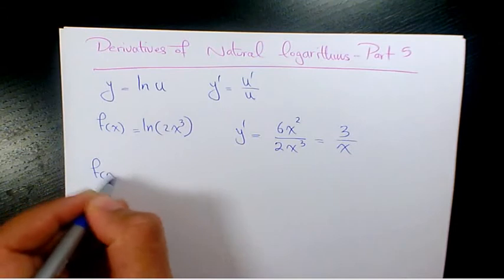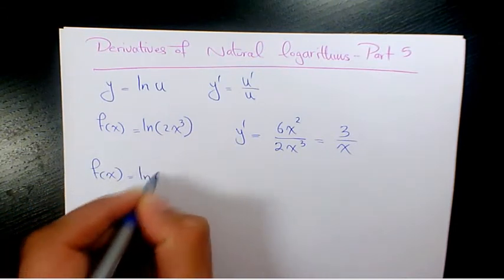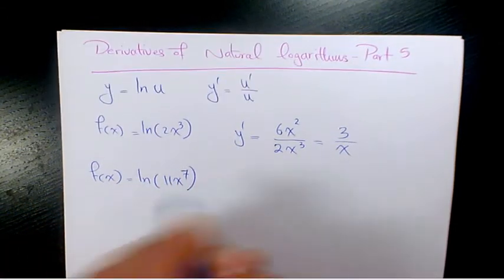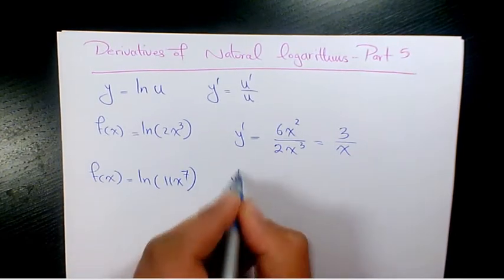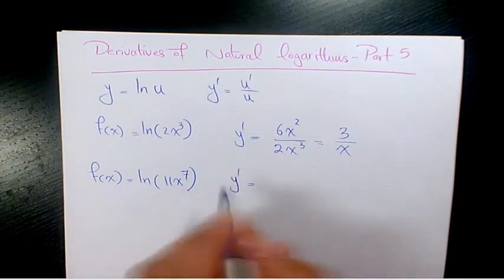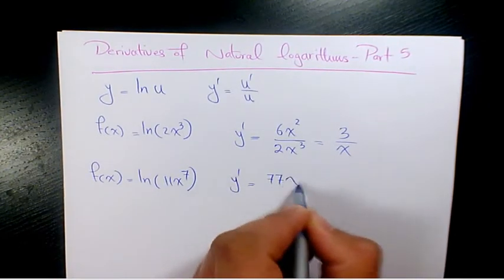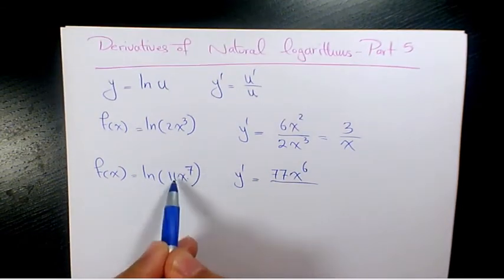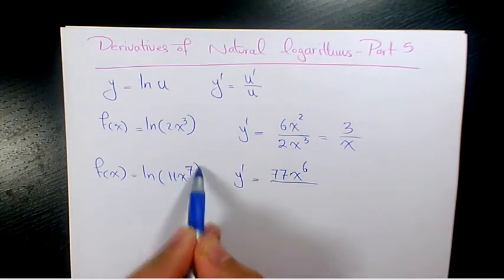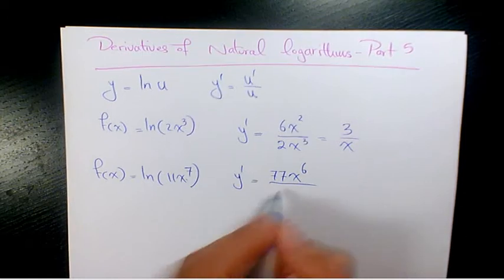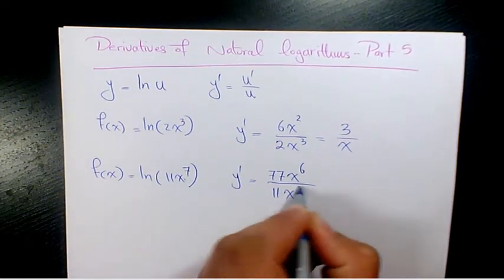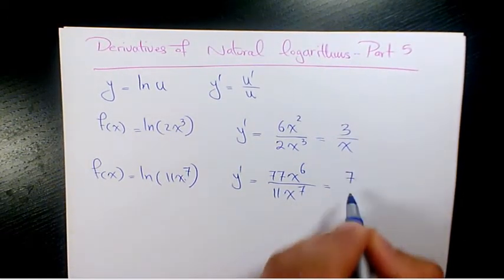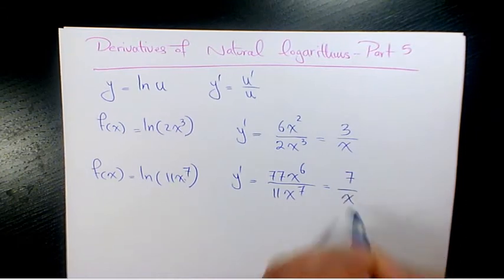Next example: ln of 11x to the power of 7. Y prime is going to be 77x to the power of 6, which is the derivative of 11x to the 7, over 11x to the power of 7, which simplifies to 77 over x.